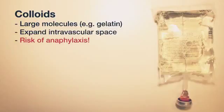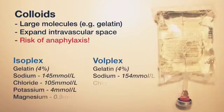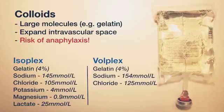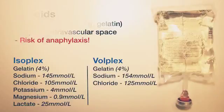Examples of colloids include Isoplex and Volplex. Both contain 4% modified fluid gelatin, sodium and chloride. Isoplex additionally contains potassium, magnesium and lactate in the proportions shown on screen.